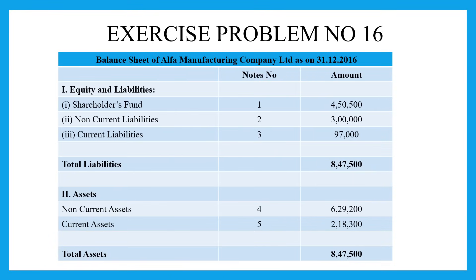Now all calculations are complete. Entering the final figures into the balance sheet format: shareholders fund is 4,50,500 rupees (working note 1), non-current liabilities is 3,00,000 rupees, and current liabilities is 97,000 rupees — total liabilities 8,47,500 rupees. Non-current assets plus current assets also total 8,47,500 rupees. Hence, both liabilities and assets have been balanced.